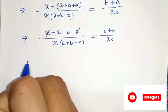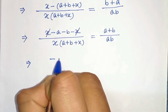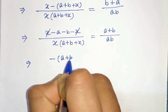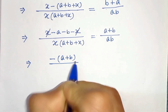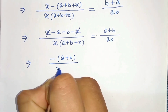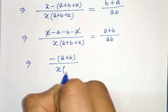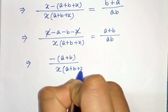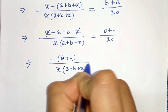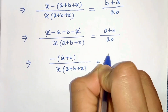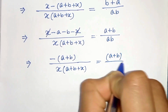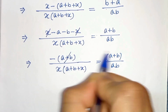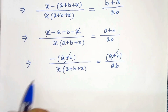In the next step let's take out the common minus sign. So we get (a + b) divided by x times (a + b + x) equals (a + b) divided by ab. Then (a + b) and (a + b) get cancelled from both sides.